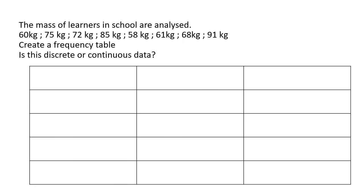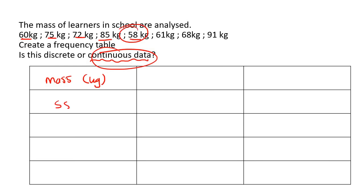The mass of learners in a school are analyzed — create a frequency table. If you walk up to someone and say 'can I just count your mass?' it doesn't make sense. You're going to measure mass — you'd say 'can you stand on the scale?' So because we're measuring, this is continuous data. Because it's continuous, in your table you're not going to list individual values; you're going to make a range. That's what we do with continuous data.